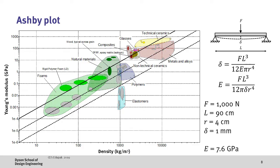Then we can put some assumptions into our analysis. For example let's assume that the maximum force is 1000 newtons, the length of the beam is 90 centimeters, the radius is 4 centimeters, and the maximum allowable deflection is 1 millimeter. If we put these numbers into the equation we can get a lower limit for our Young's modulus which is 7.6 gigapascals.